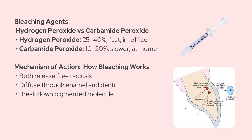Now, how does bleaching actually work? Well, both hydrogen peroxide and carbamide peroxide produce free radicals, like oxygen radicals, that diffuse through the enamel and dentin. These radicals break down larger, pigmented organic molecules into smaller, less pigmented ones, making the teeth look whiter.